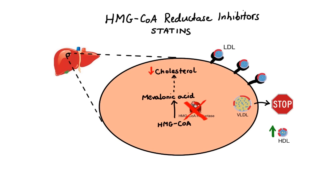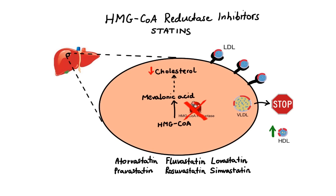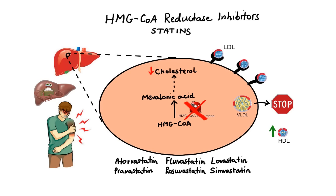Examples of drugs that belong to this class are atorvastatin, fluvastatin, lovastatin, pravastatin, rosuvastatin, and simvastatin. When it comes to side effects, because statins are metabolized in the liver, they may elevate liver enzymes and thus increase risk of liver toxicity in susceptible patients. Secondly, use of statins has been associated with muscle-related problems or myopathy, and in rare cases rhabdomyolysis — that is, destruction of skeletal muscle. The mechanism behind that is still being investigated; however, it is thought to be related to the inhibition of mevalonate production, which is an essential precursor to other compounds important for maintaining the integrity of muscle cells.